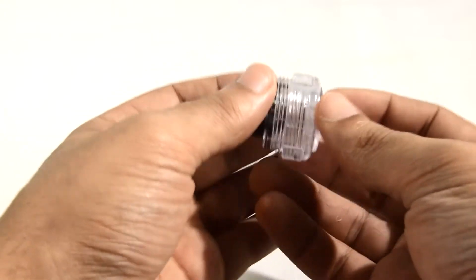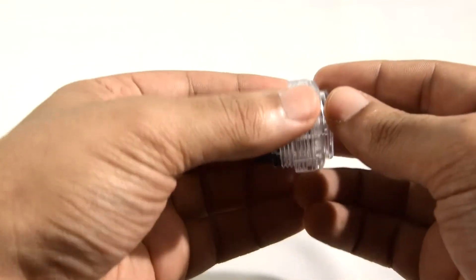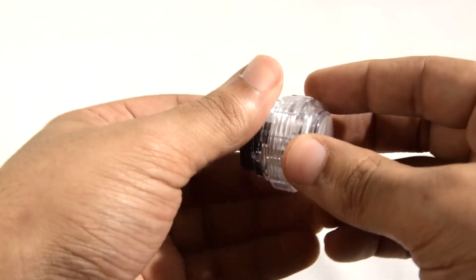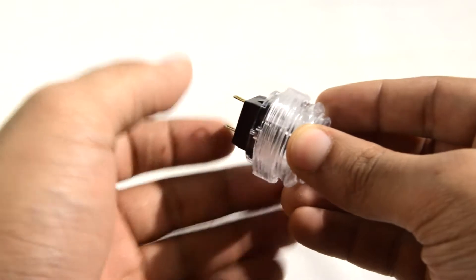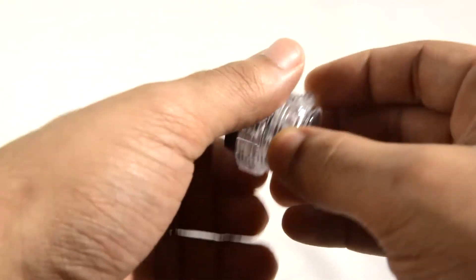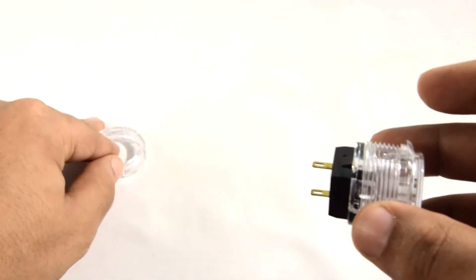First you will want to remove the locking ring from the push button. It serves no purpose besides getting in the way when it's outside of your arcade stick, so go ahead and rotate it counterclockwise away from the top of the push button until it's free of the threads. Put it somewhere that you won't lose it, because you'll need it later.